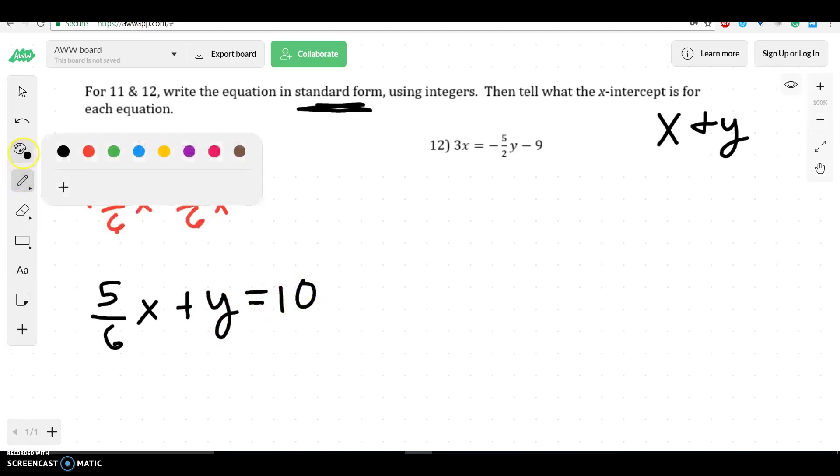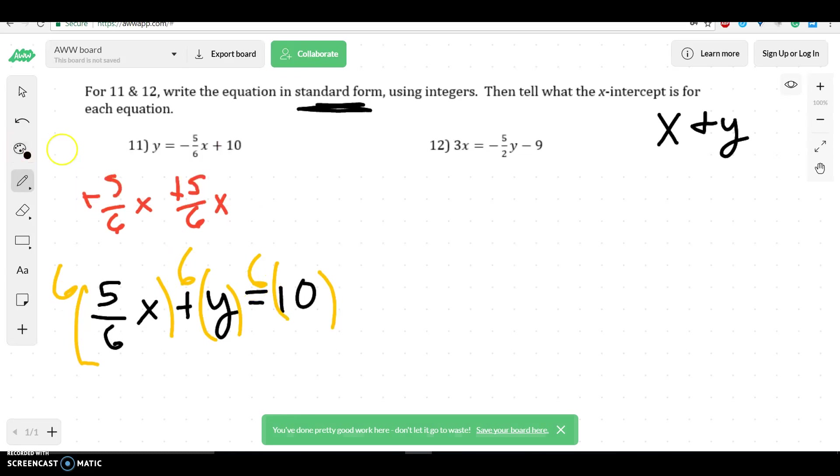The last thing is you can't have a fraction in standard form. So if you have a fraction, you have to get rid of it. We get rid of that by multiplying everything by that number. And so when you multiply by 6, that would cancel. I get 5x plus 6y is equal to 60. Now that's in standard form.